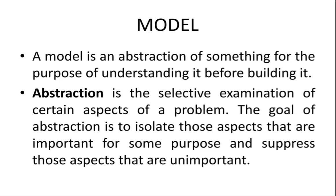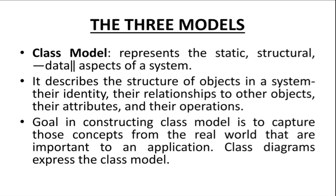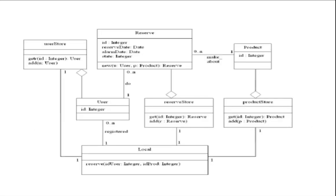Abstraction means class models contain only class details; state models contain only state details — other details won't be there. So this is the class model. You can see this is the diagrammatic representation of classes. This class model only contains class-related details, not any other details. That's why it's abstract. Class model is concentrating only on the classes, not on other details like states or interactions.